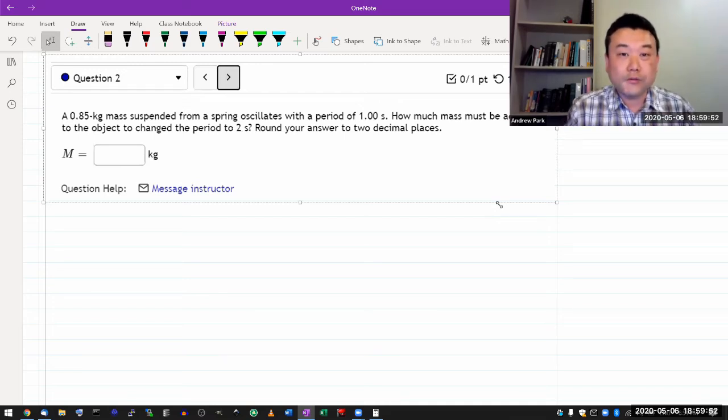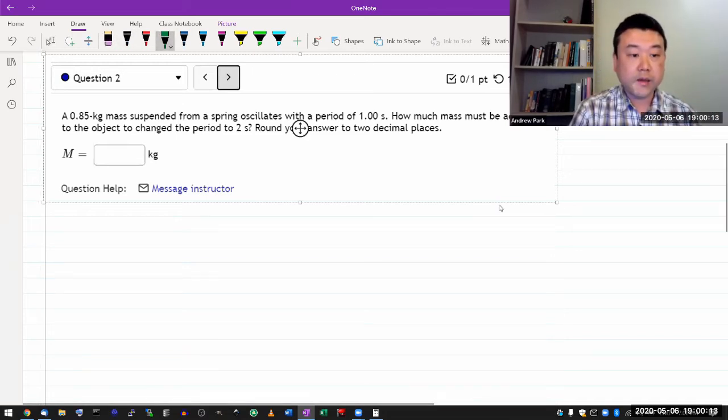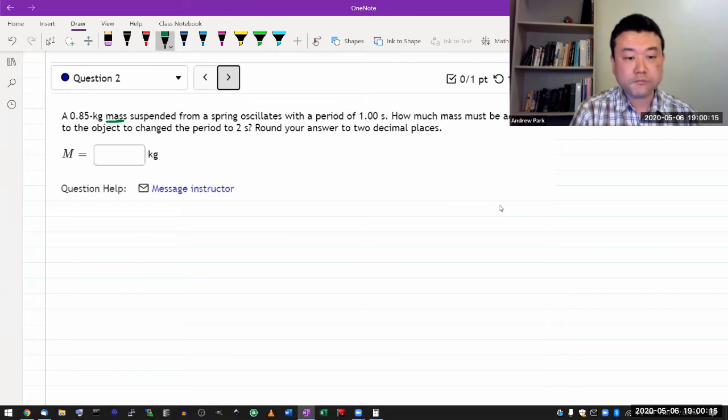And there are questions where there's a key formula that you simply have to know. You read it when you're reading the textbook and you kind of recognize that's an important formula. You memorized it and having memorized it, you can just use it. So here we do this question, which is dealing with mass hanging from a spring. The formula you simply have to know, and this is not something that's easy to derive, unless you know, is this one.